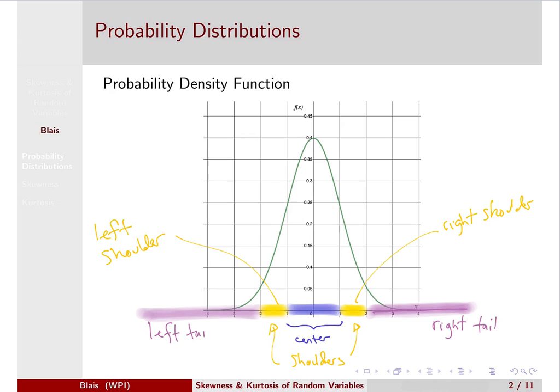The tails of distributions become very important when you start to talk about what you consider to be rare events. With a normal distribution, once you start getting three or four standard deviations from the mean, you start to get into the territory of very rare events.